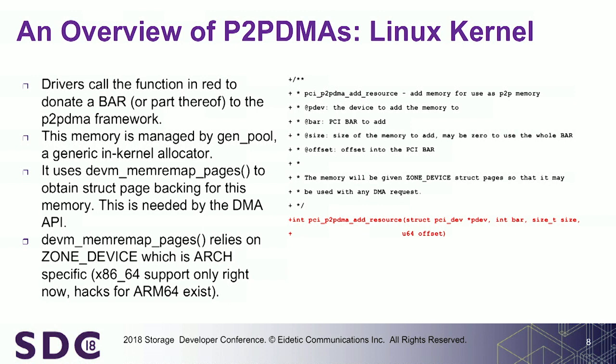We map these new physical pages — and this is transparent to driver writers; you don't need to worry about this if you're just updating your drivers. In the background, we make this call and put struct page backing on all those pages. If someone donates 20 terabytes of memory, this might take a little while because we need struct page backing for all those terabytes. So once we start getting very large byte-addressable persistent memory, we may want to rethink this approach.